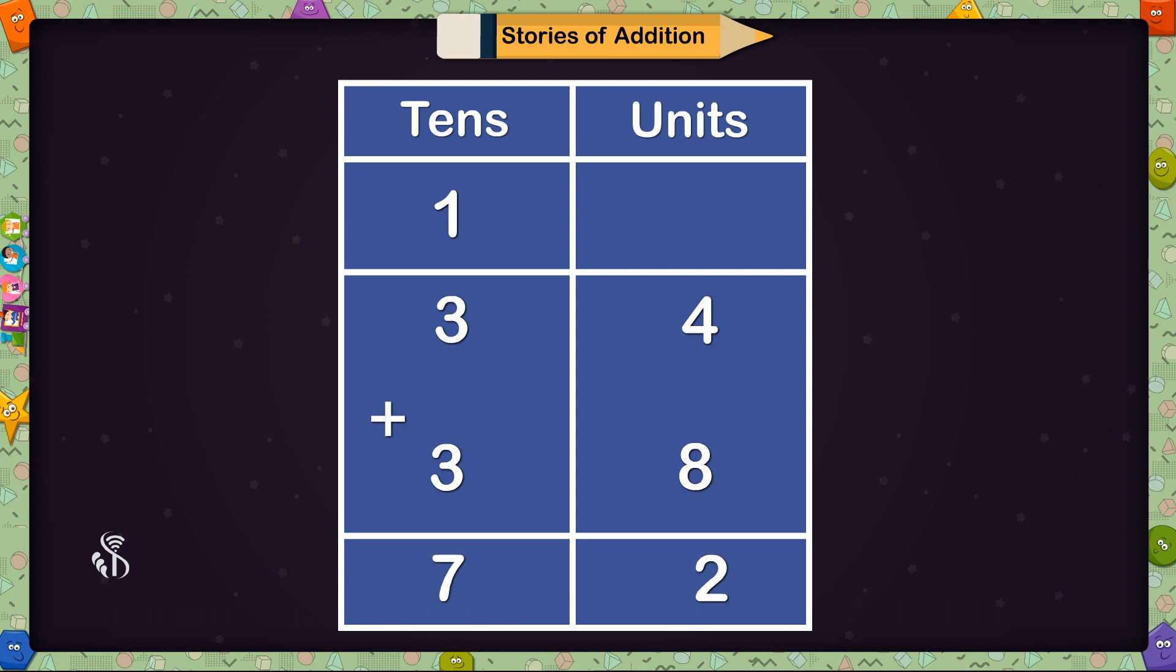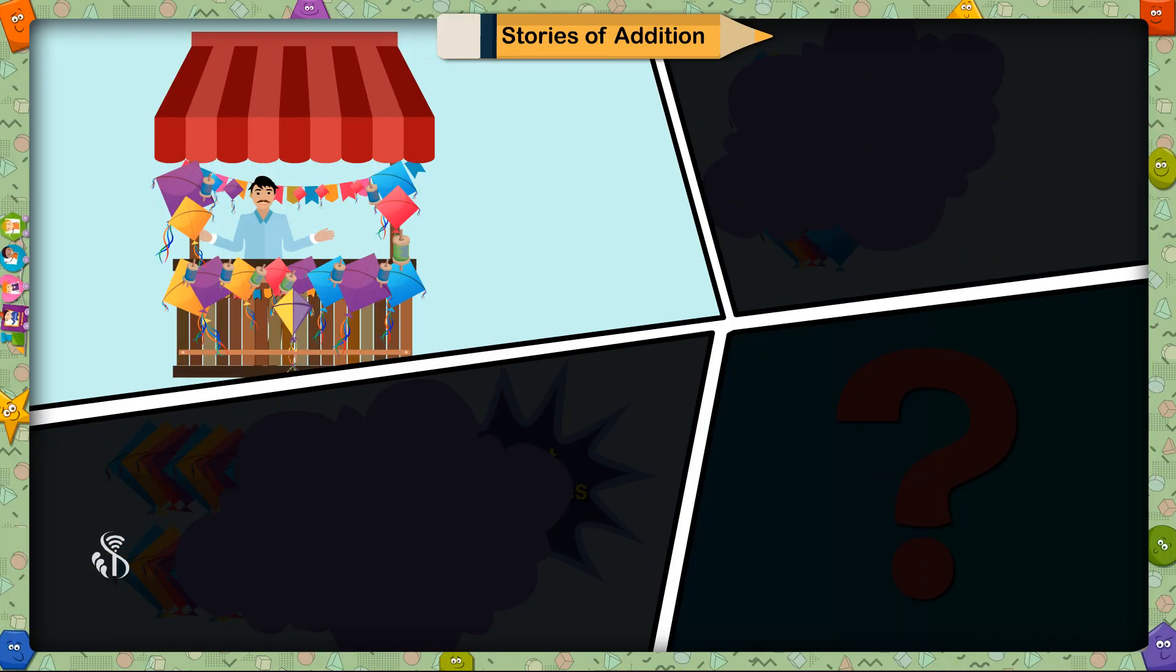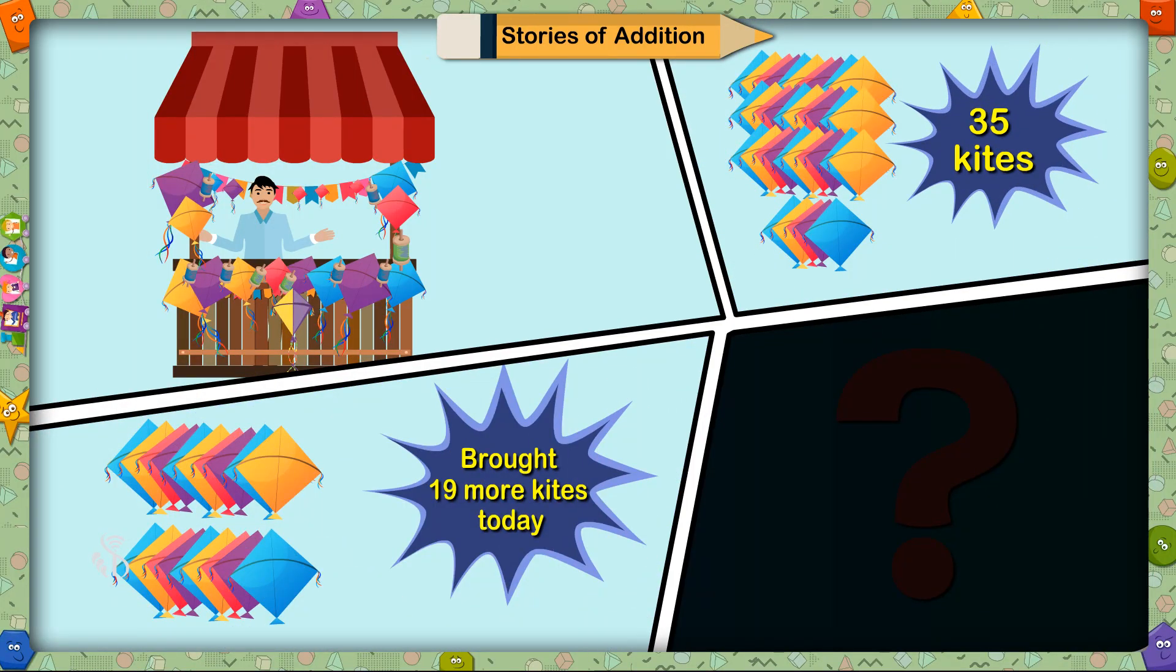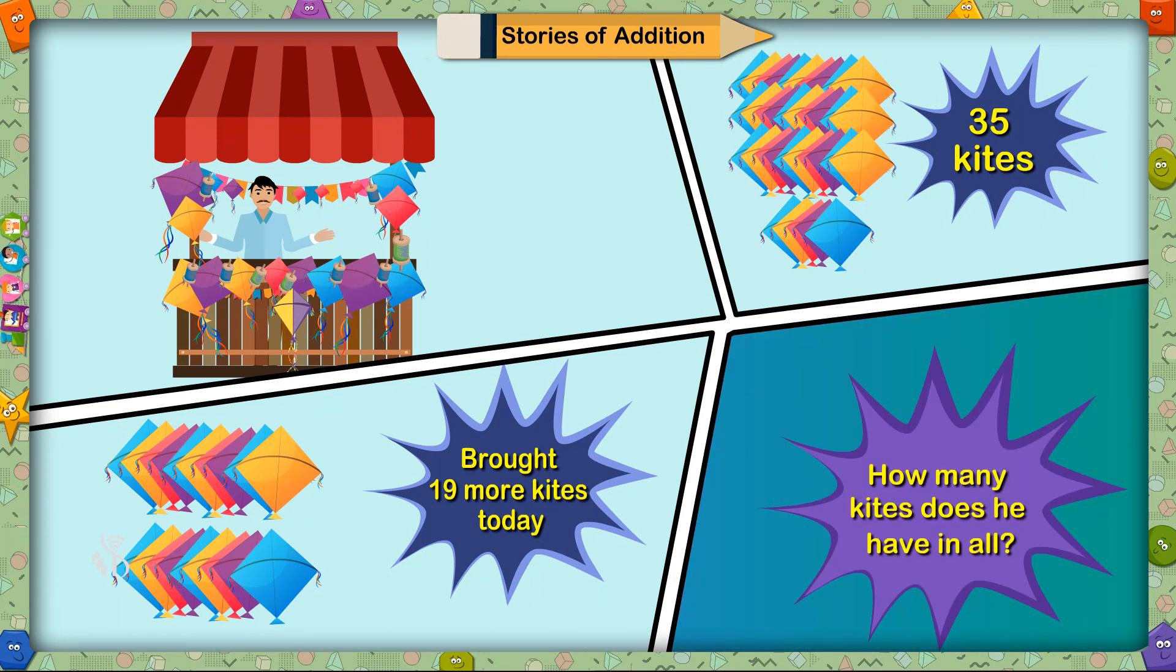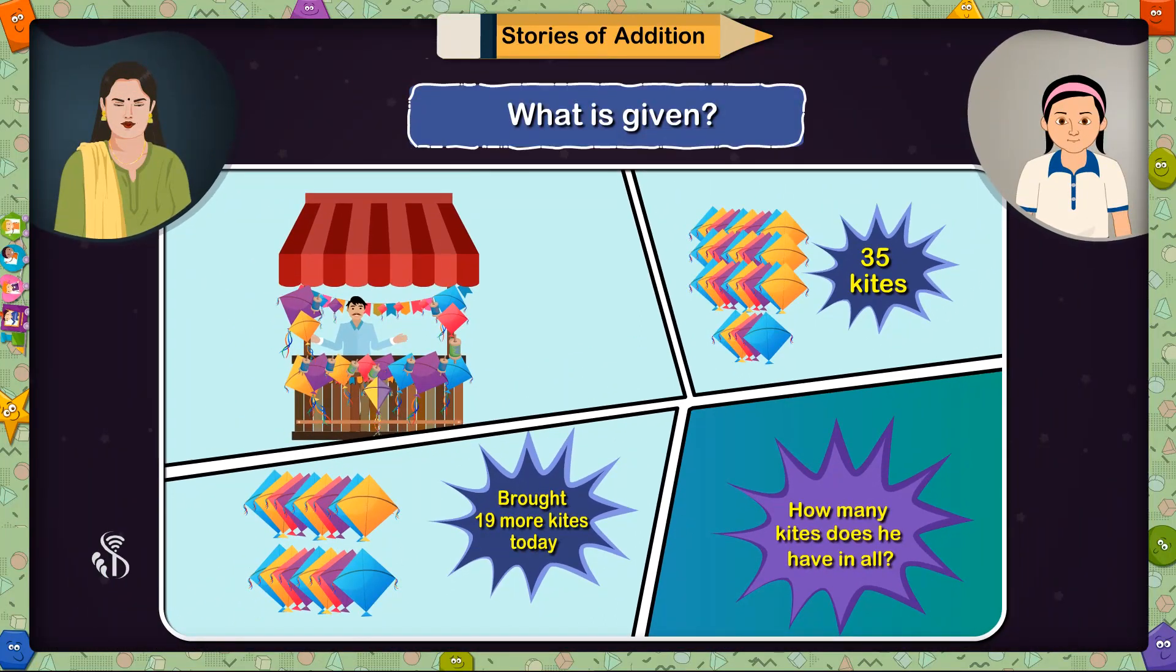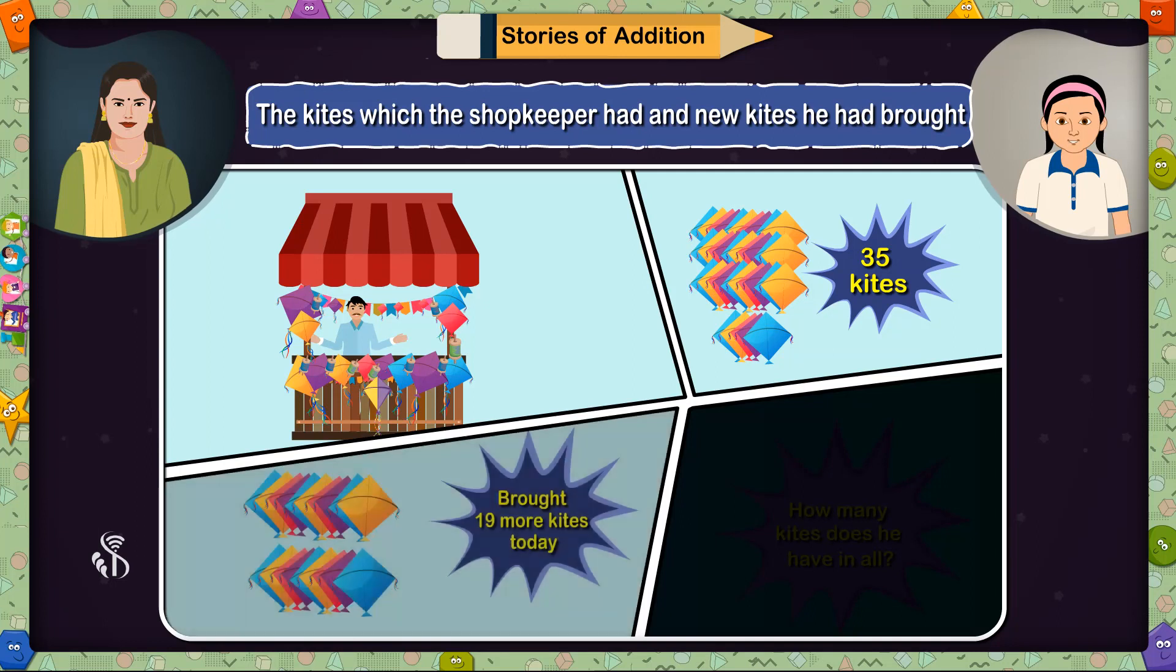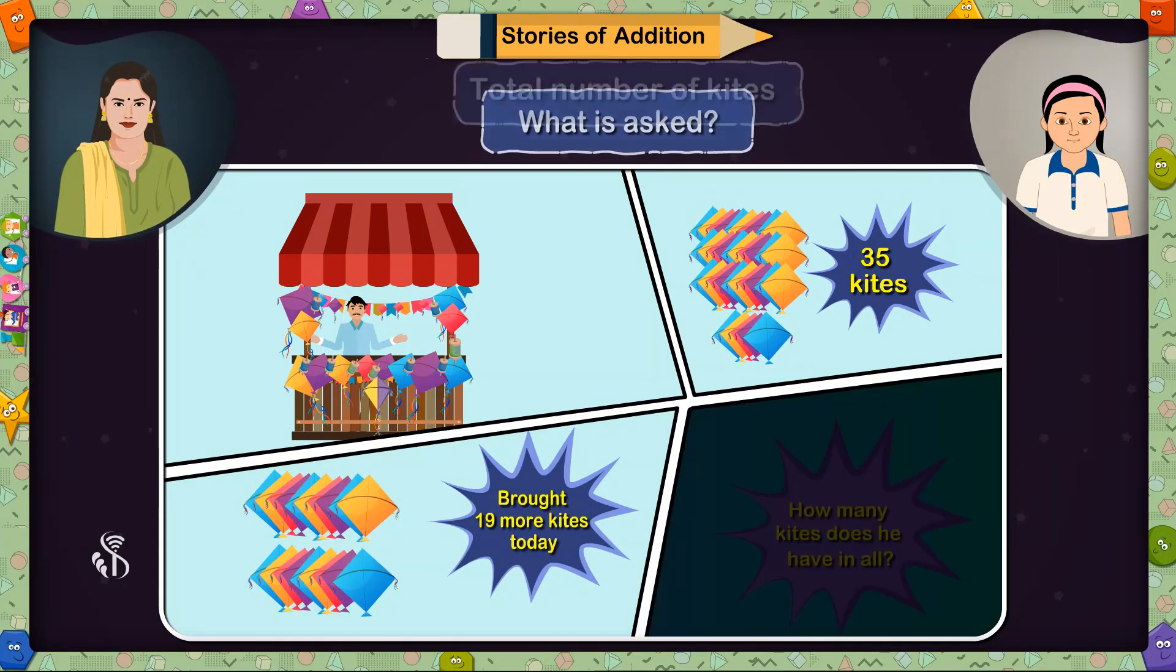The next sum is: A shopkeeper had 35 kites. He bought 19 more kites today. How many kites does he have in all? Tell me what is given here? The kites which the shopkeeper had and new kites he had bought. What is asked here? Total number of kites. What shall we do?